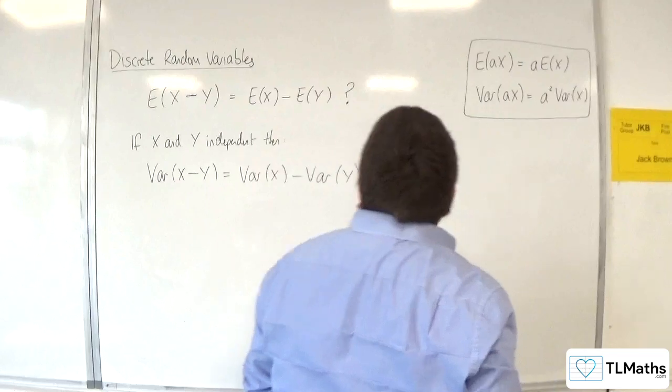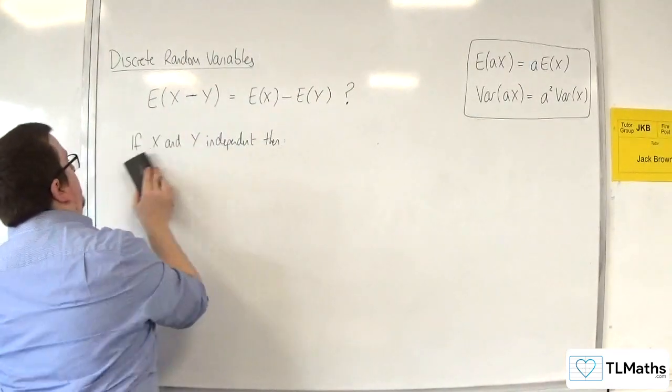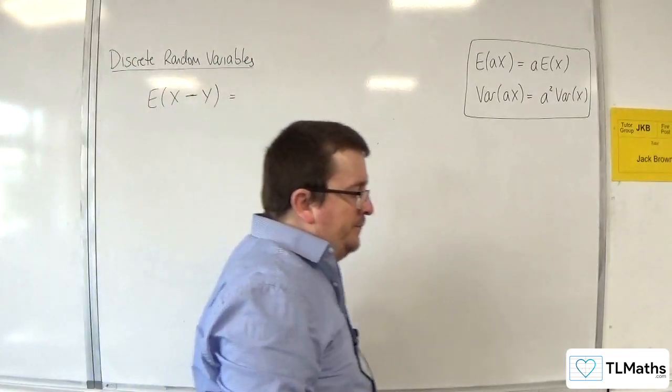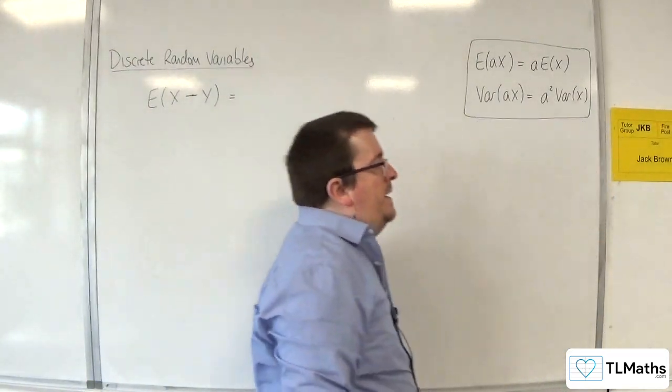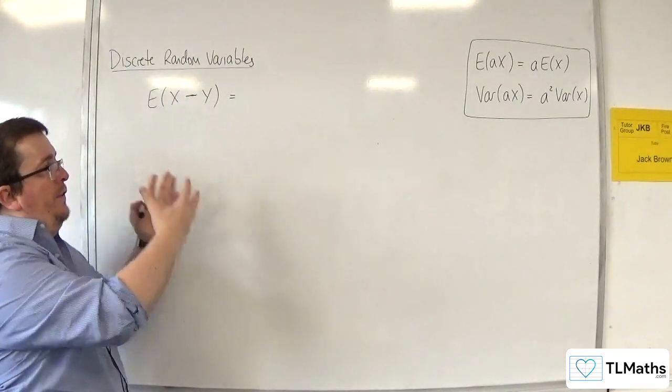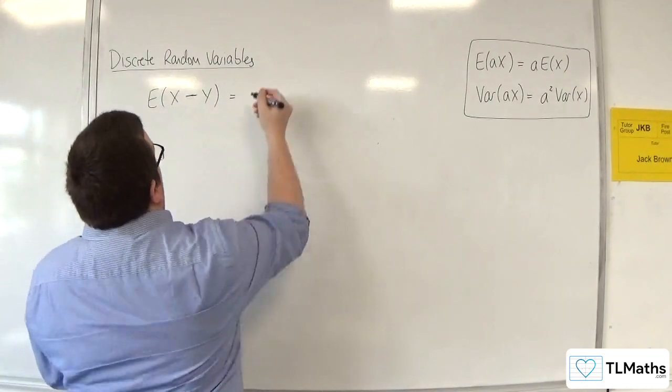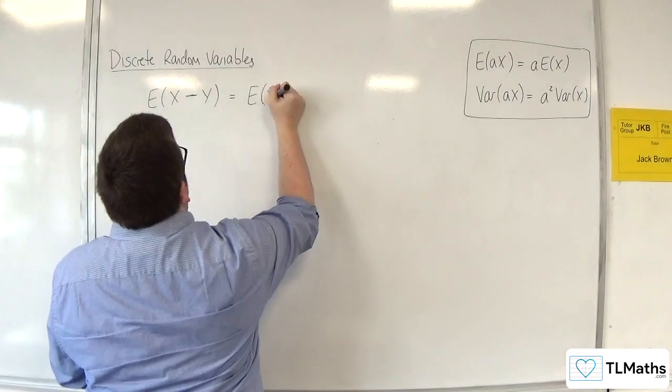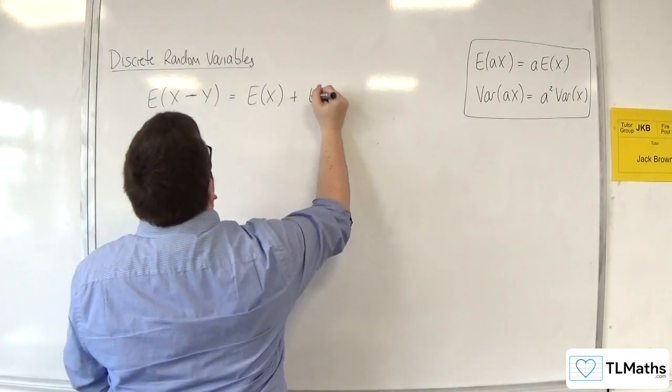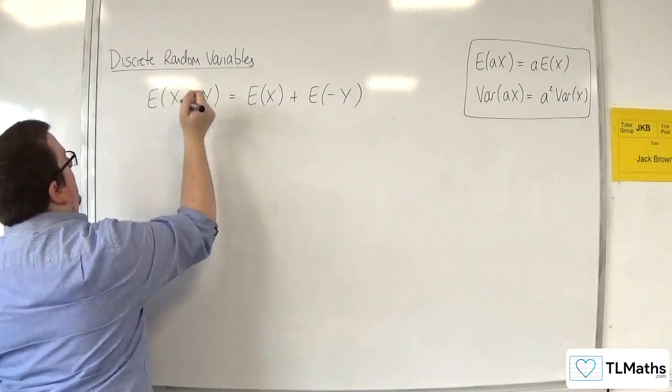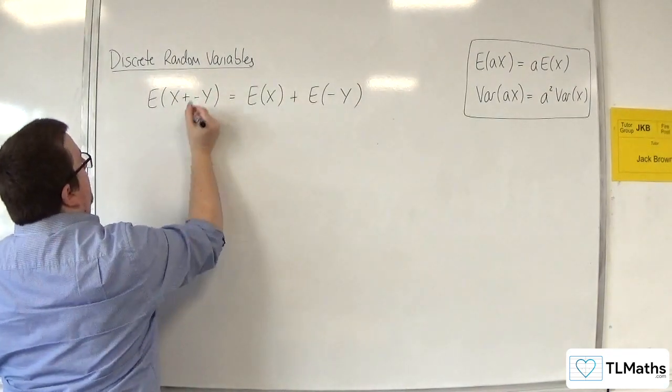Okay, so let's take a look at this first statement. Let's look at the left-hand side. Now, we already know what this is in the case of an addition. So what I can do is say that has to be E of X plus E of minus Y. Essentially, I'm writing that as plus negative Y.